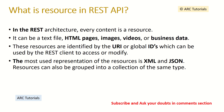What is a resource in REST API? In the REST architecture, every content is a resource. It can be a text file, HTML pages, images, videos, or business data. These resources are identified by a URI or global IDs used by the REST client. The most used representations of resources are XML and JSON. In more modern web applications, JSON is becoming the de facto mode for communication, though XML can also be used.